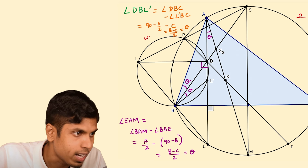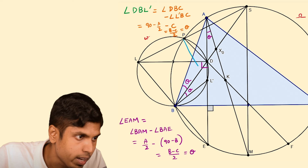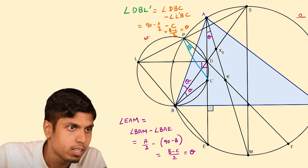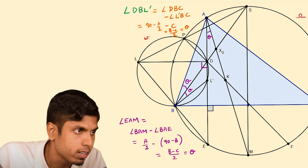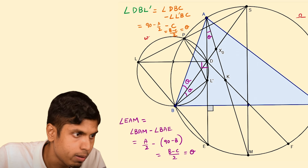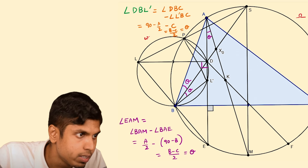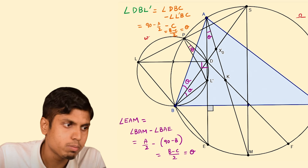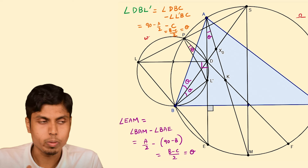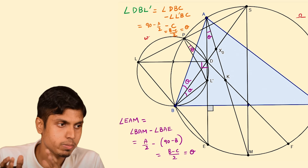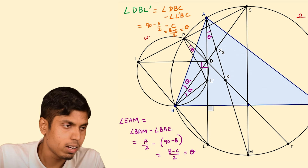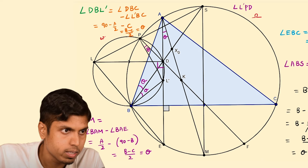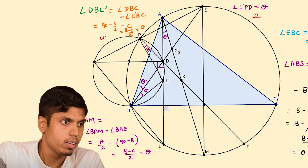Additionally, angle L'PD is also theta. If we join L' and P, this angle equals theta because L', D, and P all lie on circle omega. By the inscribed angle theorem, angle L'PD equals angle L'BD, which is theta.